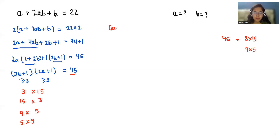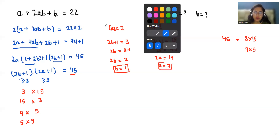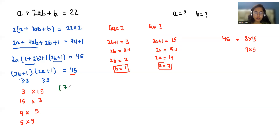Case 1: 2b + 1 = 3 and 2a + 1 = 15. From the first equation, 2b = 2, so b = 1. From the second, 2a = 14, so a = 7. So in this case our values for (a, b) are (7, 1).